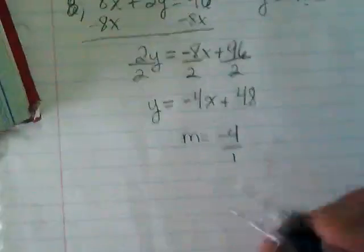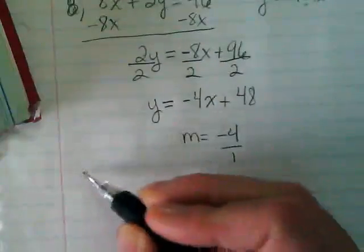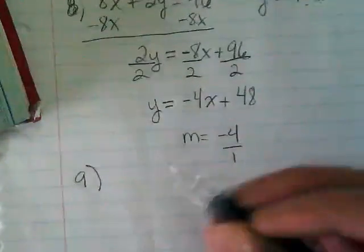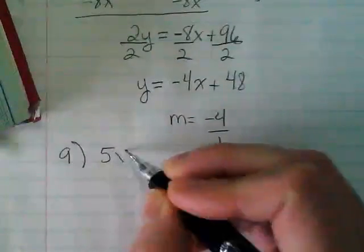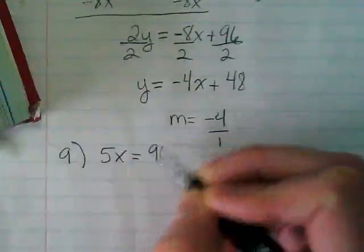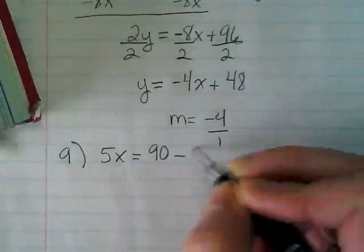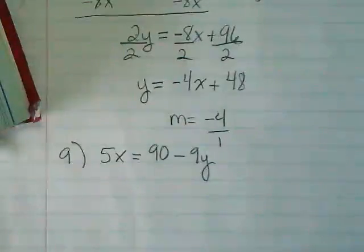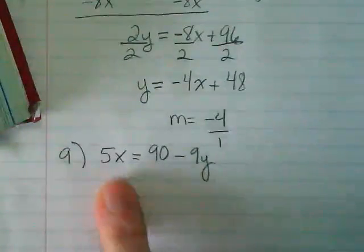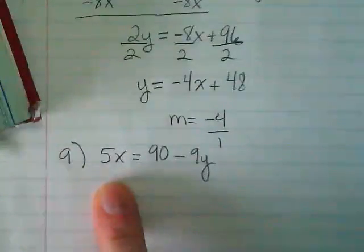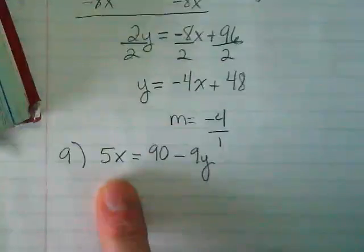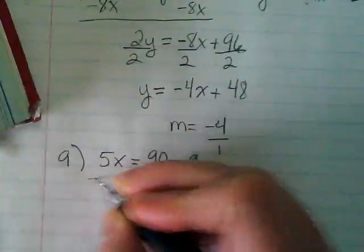So we're going to do number 9 together and then number 10. These are not in standard form, but they have all the pieces. We just need to get things in the right places. I see my 5X here, and I know I want it to be on the right side of the equation because in Y equals MX plus B, the MX goes right after the equal sign. So I'm going to subtract it from both sides.